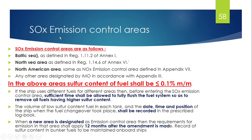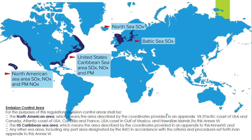Now, what do we mean by Emission Control Area? These are areas which are more sensitive to SOx pollutants, and therefore strict rules and regulations are required. These areas are the Baltic Sea, the North Sea, the North American area, and the US Caribbean area. These four areas are called Emission Control Areas as per SOx regulation.